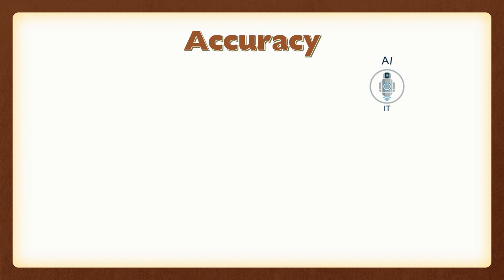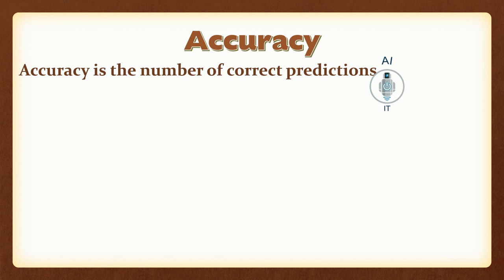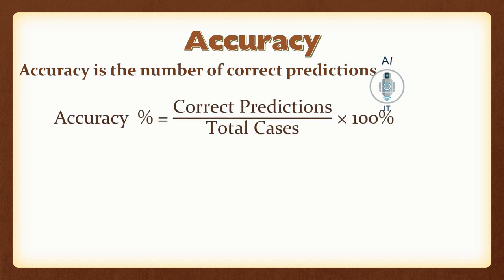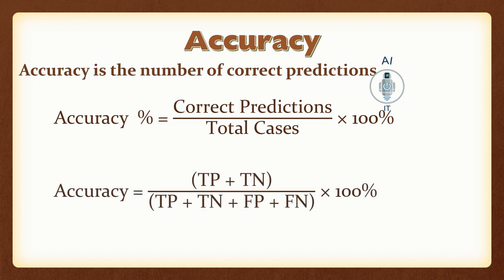Now let us learn the evaluation parameters. The first parameter is accuracy, defined as the percentage of correct predictions. Accuracy percentage equals correct predictions divided by total number of cases, multiplied by 100. The correct predictions are true positive and true negative. We divide by the sum of true positive, true negative, false positive, and false negative, then multiply by 100 to get the accuracy percentage.